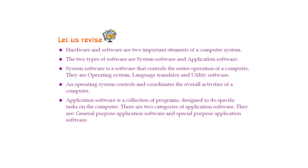It's time to revise. Hardware and software are two important elements of a computer system. The two types of software are system software and application software. System software controls the entire operation of a computer — they are operating system, language translator, and utility software. An operating system controls and coordinates the overall activities of a computer. Application software is a collection of programs designed to do specific tasks on the computer, with two categories: general purpose and special purpose application software.